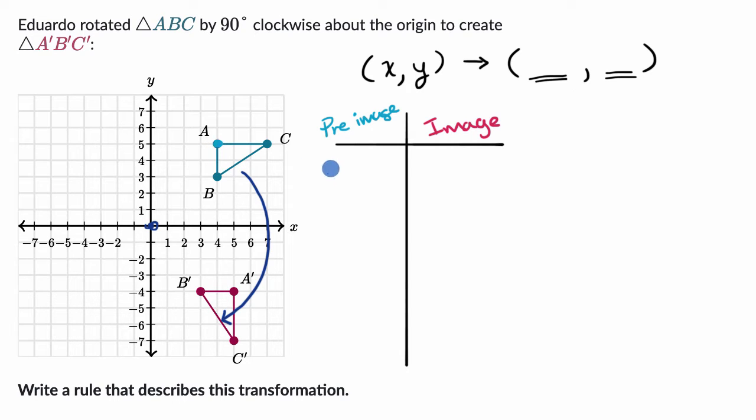Point A right over here, what are its coordinates before the rotation? A is at the coordinate X equals four, Y equals five. So four comma five. What is point B in the pre-image? It is four comma three. Point C in the pre-image is seven comma five.